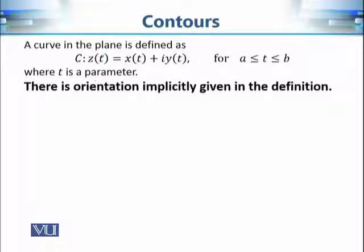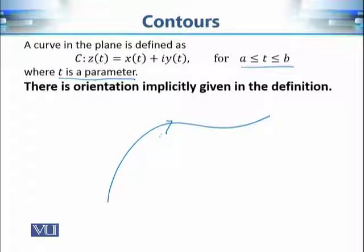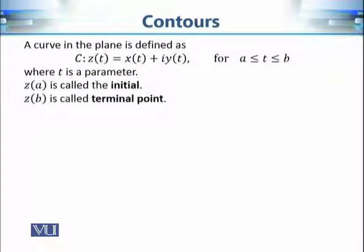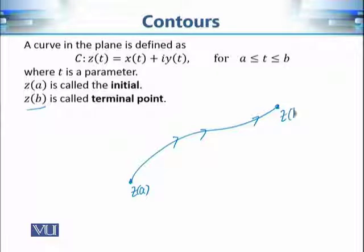An important observation from these examples is that when t increases from a to b, it gives us a direction of motion as well. We call z(a) the initial point and z(b) the terminal point, because there is always a direction of motion — either one way or the other — from the initial to the final point of the journey.